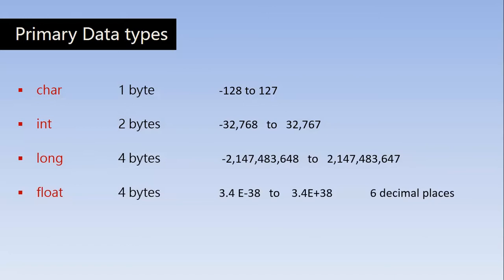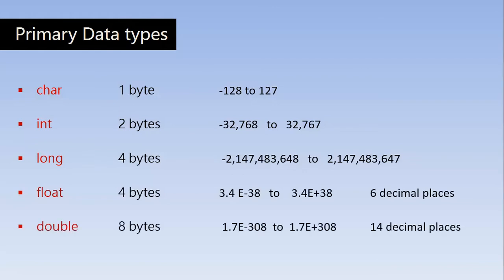Real numbers, or numbers with a decimal value, are stored in float variables. A single float variable requires four bytes of memory and can have up to six decimal fractional places. The range for a float variable is from 3.4 × 10⁻³⁸ to 3.4 × 10⁺³⁸. A double is also a type of float variable, but it can have 14 decimal places after the decimal point.